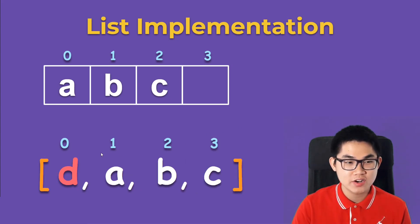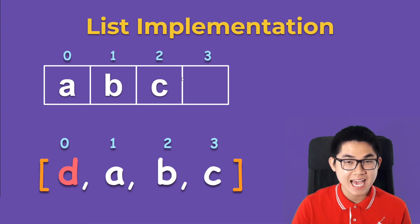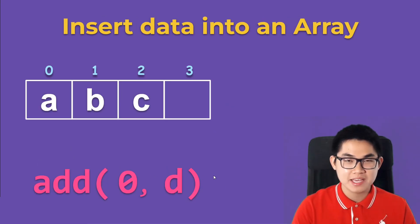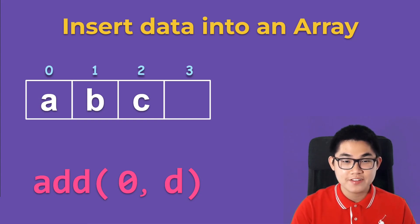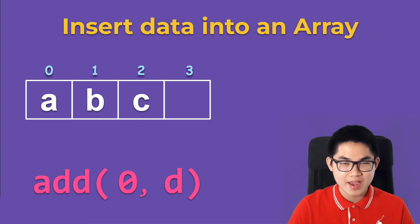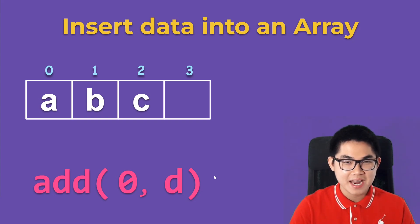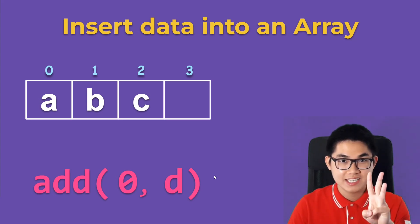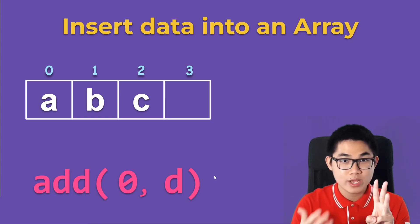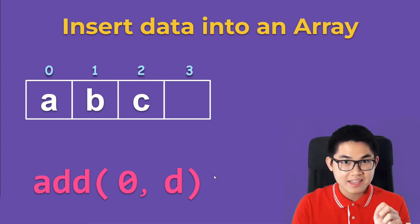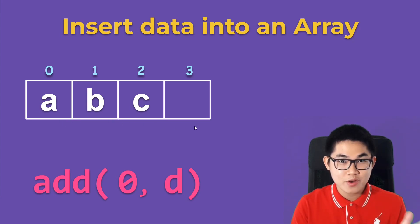For example, let's say you want to insert the letter D at the beginning of this list. Behind the scenes, what is happening to the array? When you insert something into the array, the first step is to check if there's still enough space. We know there's one space left — there are three letters so the size is three, and the array length is four.